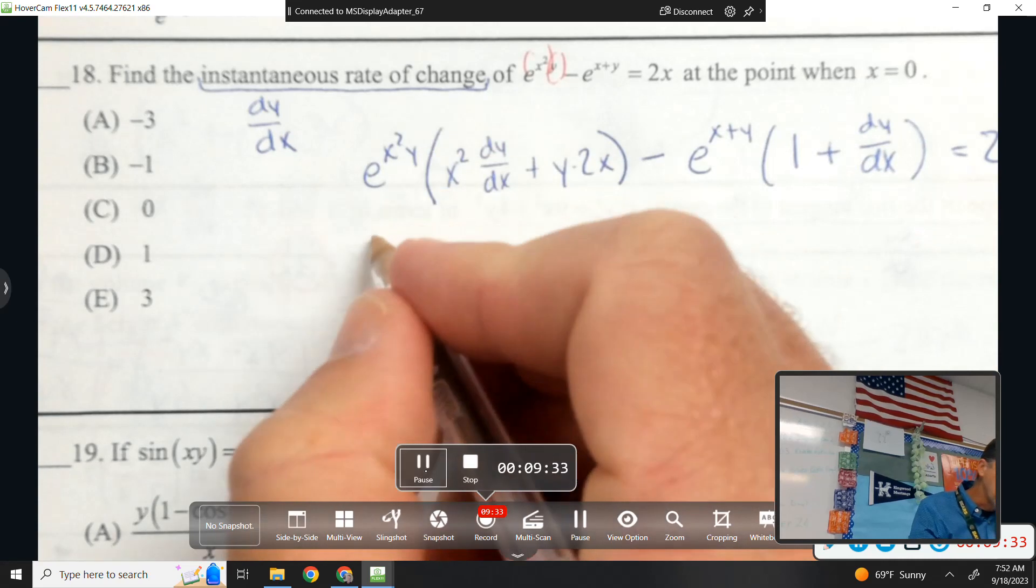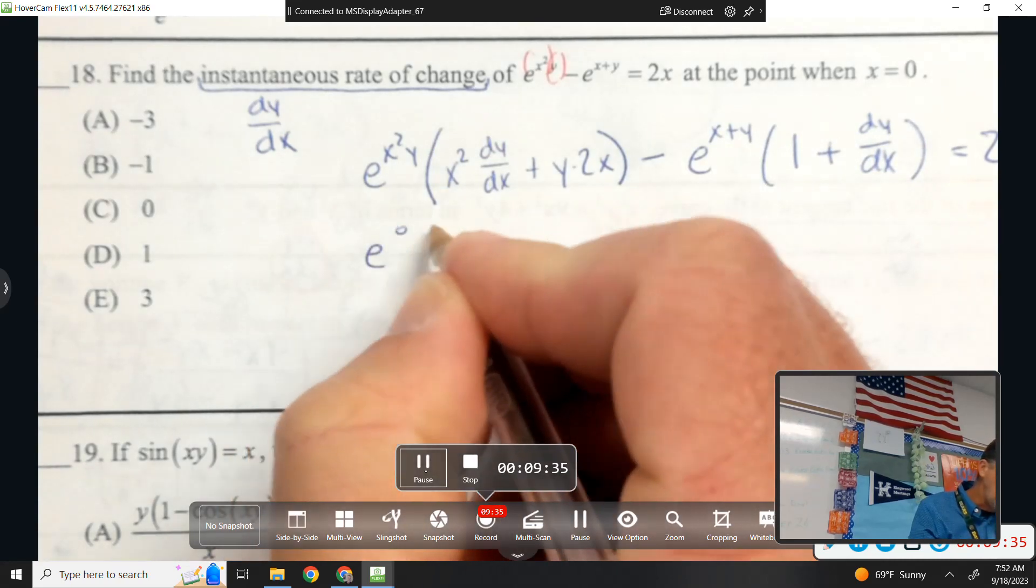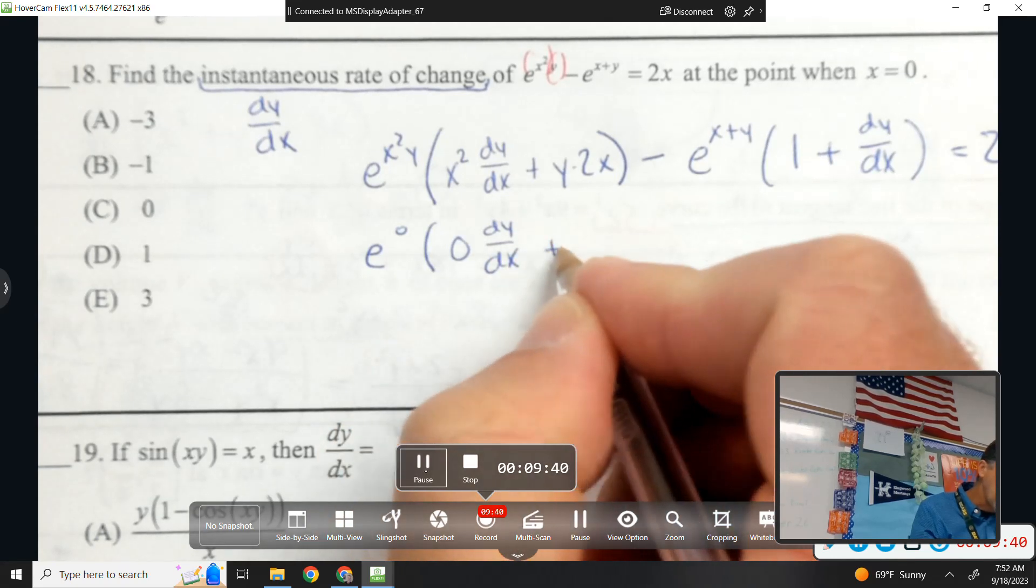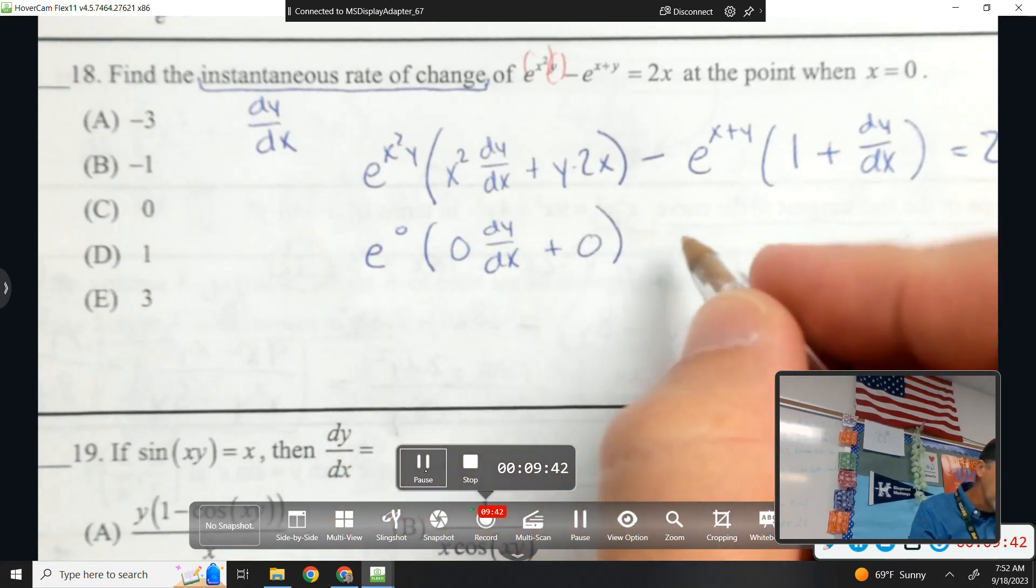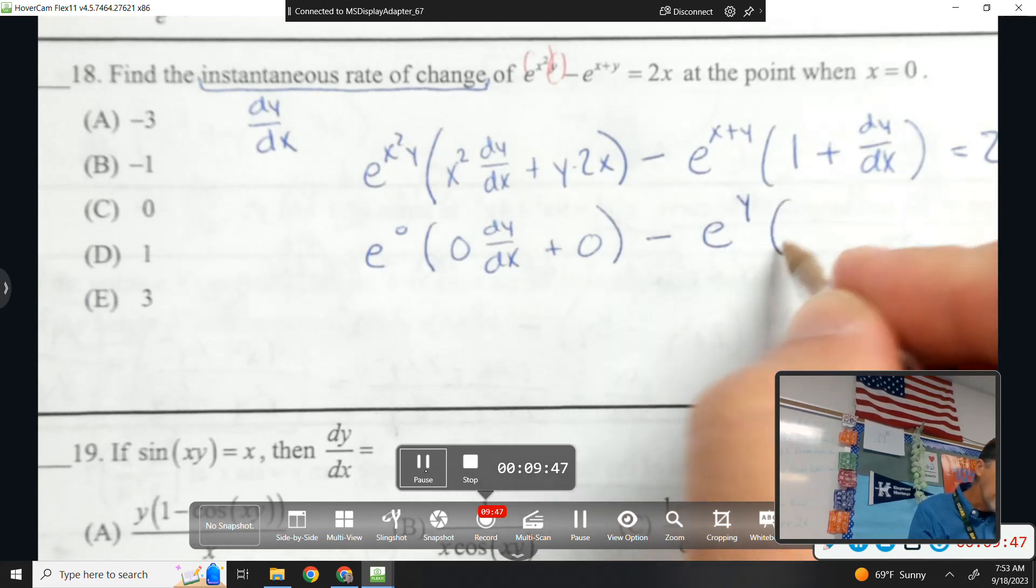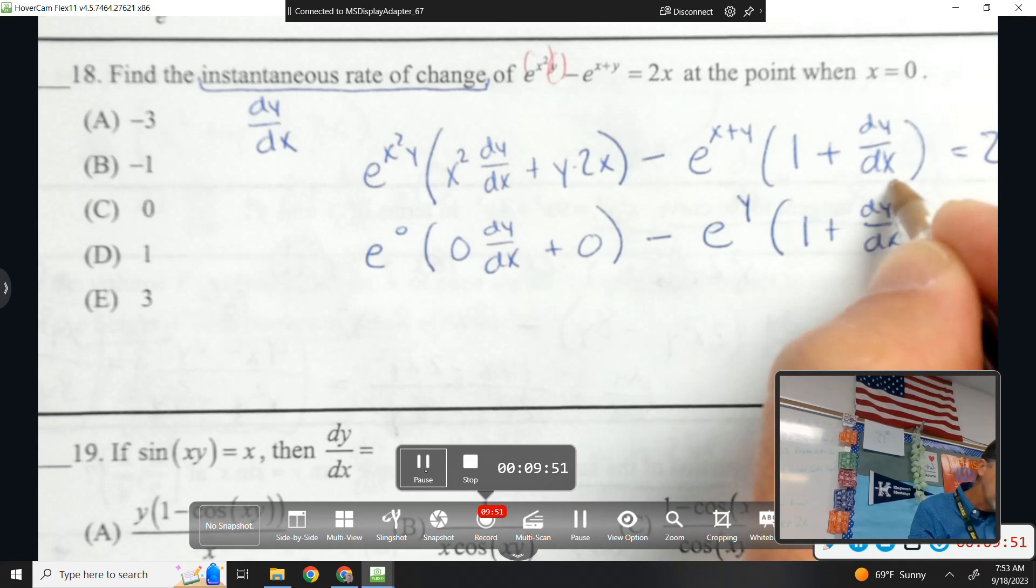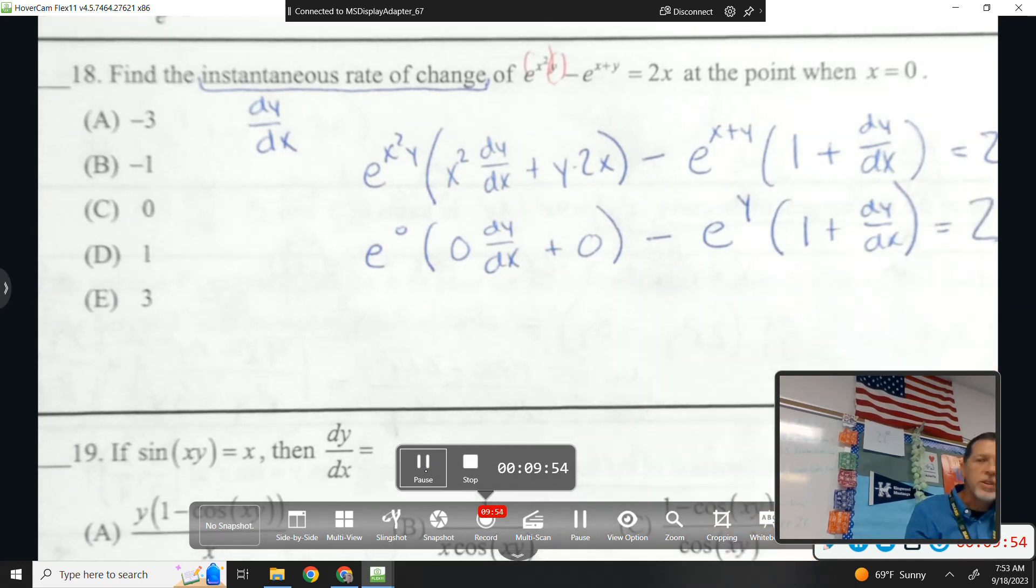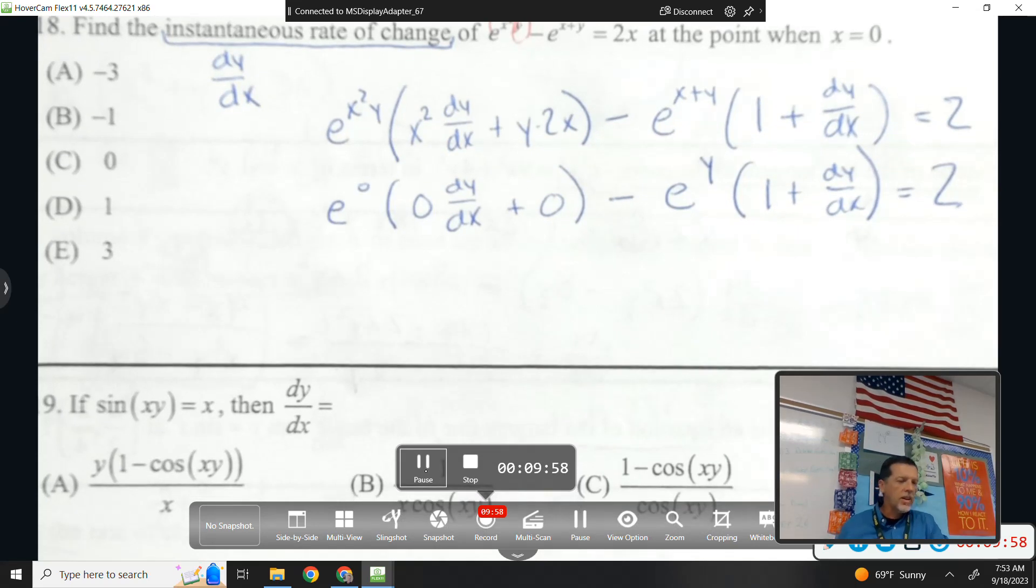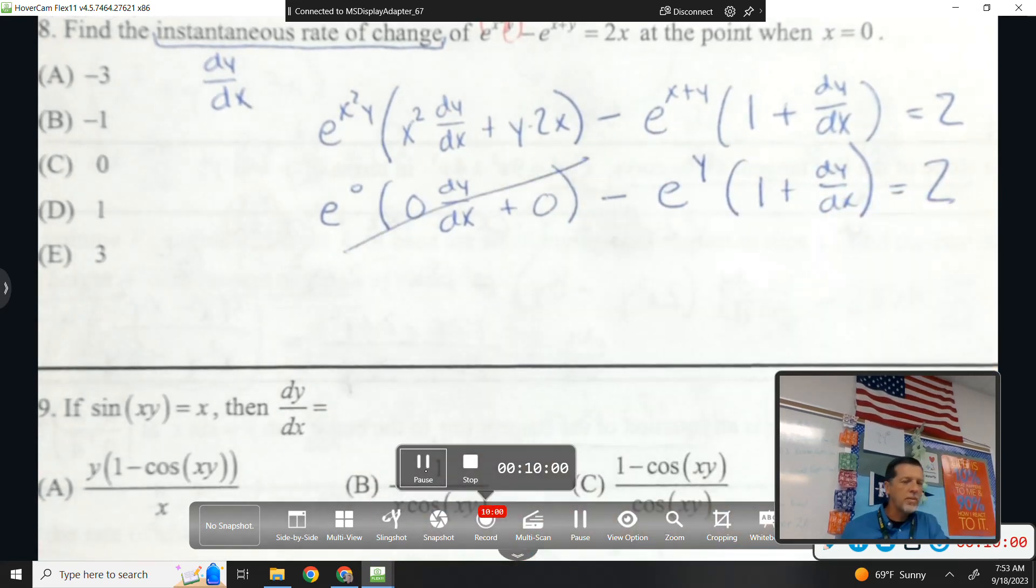Let's plug in x equals zero. This is going to wipe out a bunch of stuff. So e to the zero. Zero times dy/dx. Plus zero. Minus e to the y. One plus dy/dx equals two. All right, so that first term, all of that's just wiped out. Don't have to worry about that. I got e to the y in there and I don't know what y is.